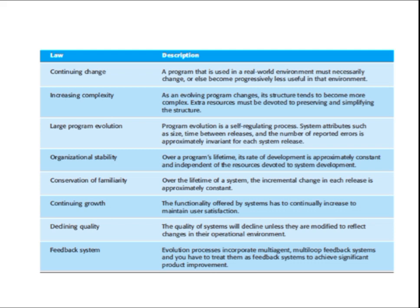The second law is Increasing Complexity: as an evolving program changes, its structure tends to become more complex, and extra resources must be devoted to preserve and simplify the structure. When you do changes to your program, the complexity increases. For example, if you have six features and 8,000 lines of code and you add a seventh feature, the lines of code increase, complexity increases, and you need more processing power and resources as well.